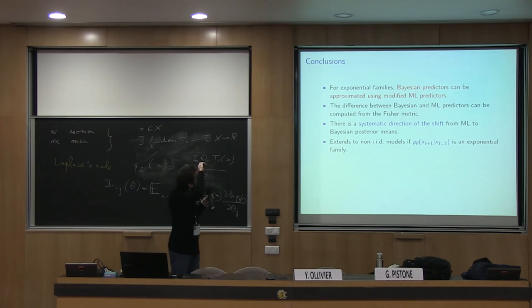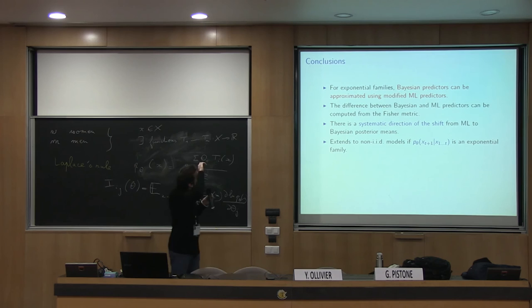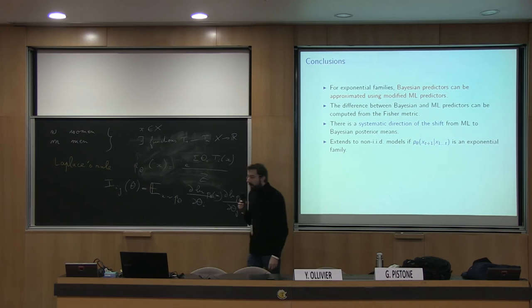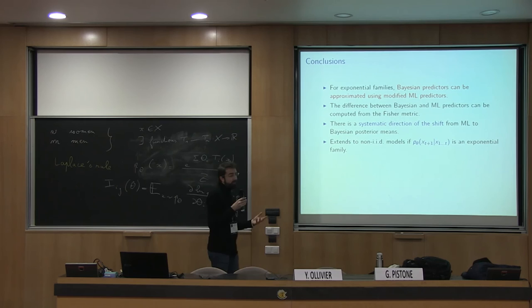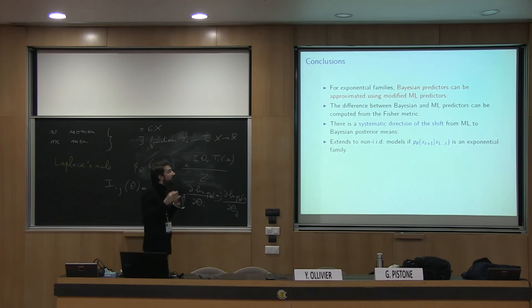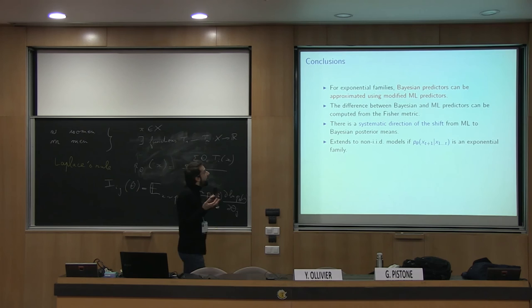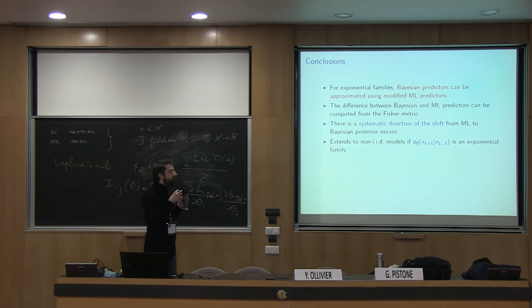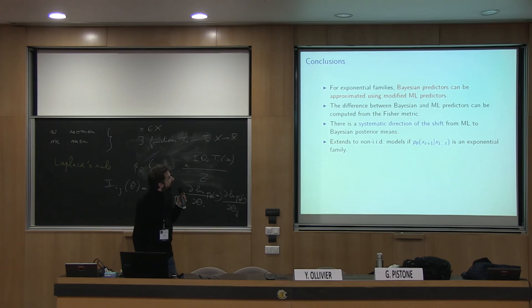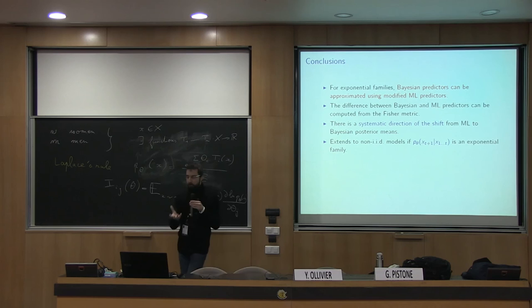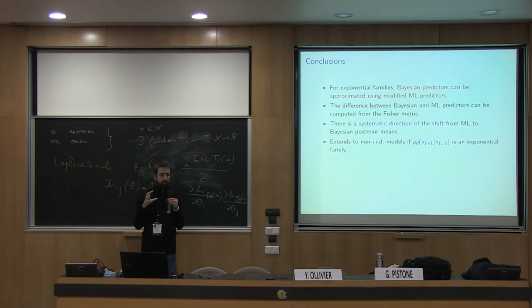The conclusion is that for exponential families, Bayesian priors can be approximated using modified maximum likelihood predictors — using simple rules, because the definition of P_SNML is not that complicated. The difference can be exactly written: P_Bayes equals P_ML times one plus the squared norm of the gradient of the new point in the Fisher metric. There is also a systematic direction of the difference between the Bayesian prior and the maximum likelihood predictor — a canonical vector field on any statistical manifold that tells you about the direction of the difference.